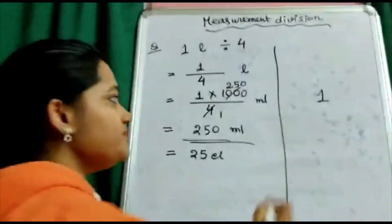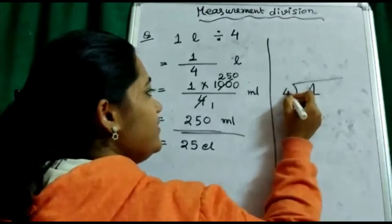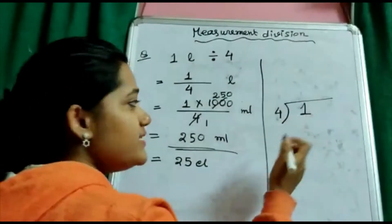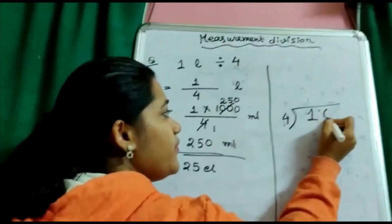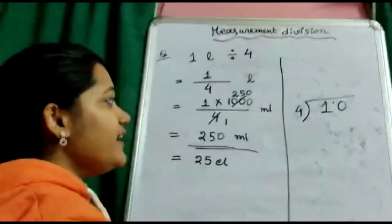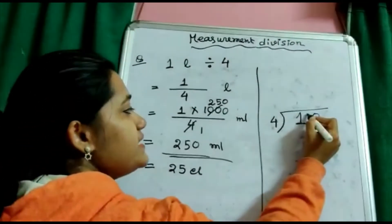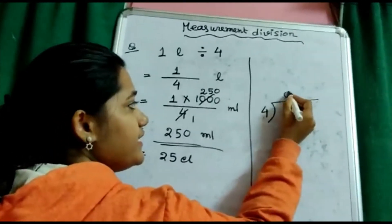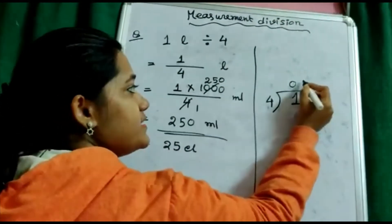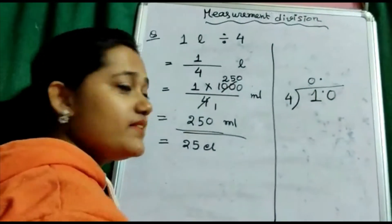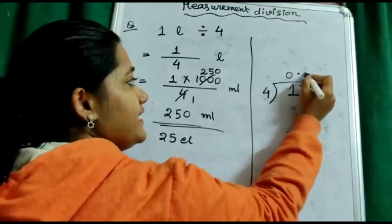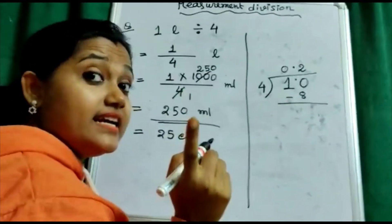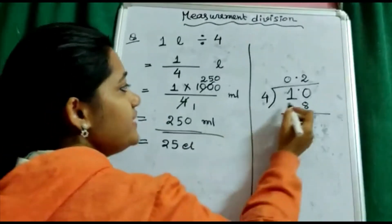Another way we can do it. One liter divided by four. One means one point zero. Now I am pressing this point here, then I can consider it as 10, then four twos are eight. We have done this decimal division like this.